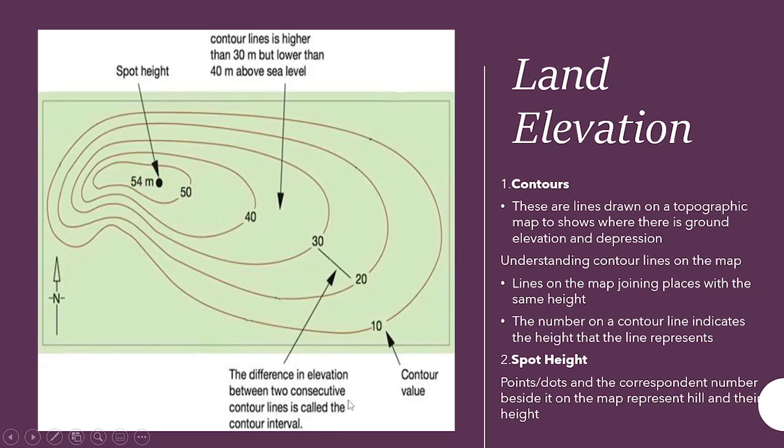Spot height. Points, dots, and the corresponding number beside it on the map represent hills and their height. So, if you look back at the example, contour lines are higher than 30 meters, but lower than 40 meters above sea level. It's not necessarily 54 meters tall, but more so, you measure how long it's on a map. It's not necessarily that important to know the specifications of it, but it's important to know the numbers. The difference in elevation between two consecutive contour lines is called contour interval. So, in this case, it would be 10 meters. The difference between the 30 meter one and the 20 meter one, 10 meters.